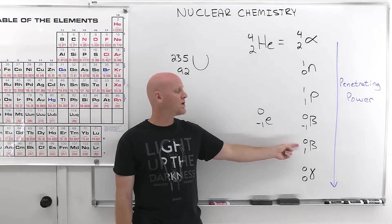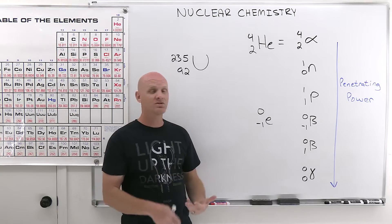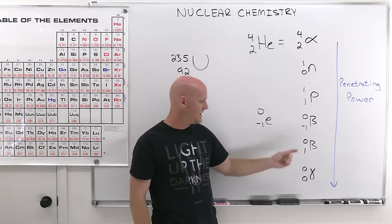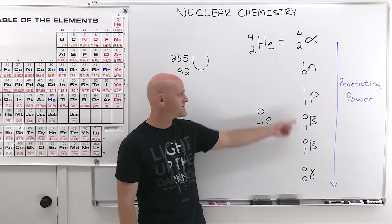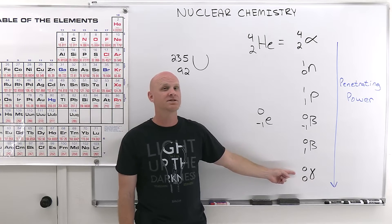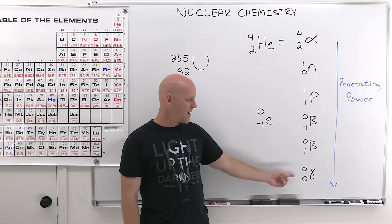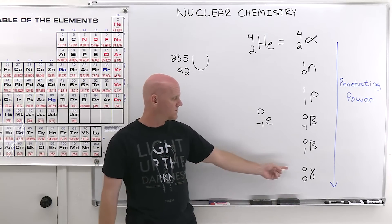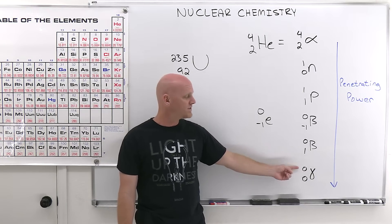A positron is not something you'd normally encounter, but you will in nuclear chemistry. It is essentially a positively charged electron — the antiparticle of an electron. Then finally we have the gamma ray, which is not a particle. All the others are particles, but the gamma ray is the highest energy electromagnetic radiation — that's why we say 'ray' and not 'particle.' It really does have zero rest mass. It's often given off as nuclear radiation.